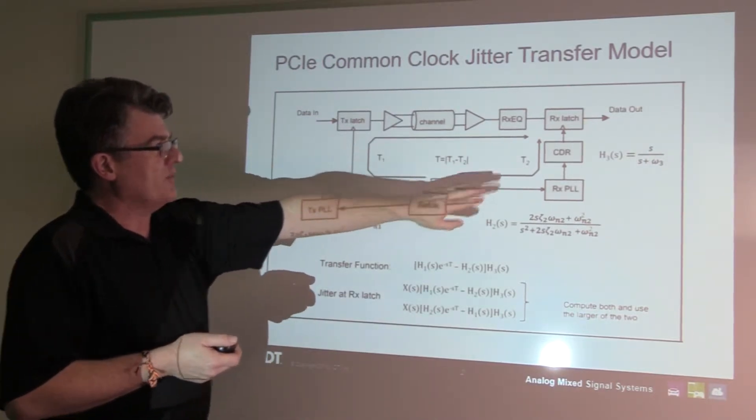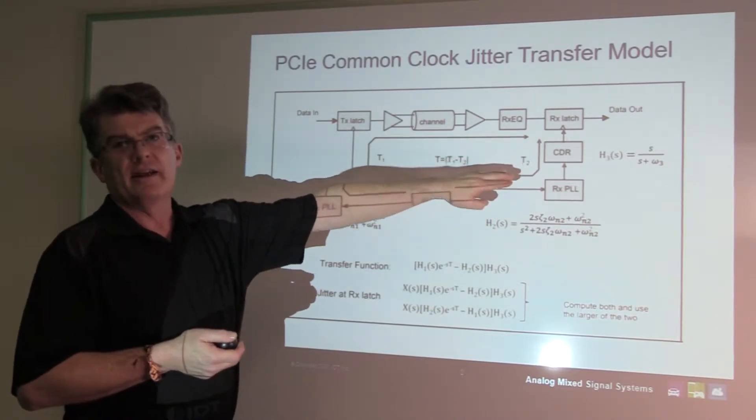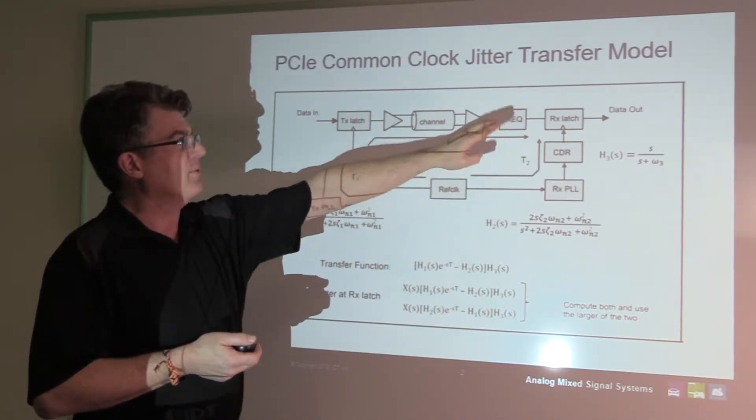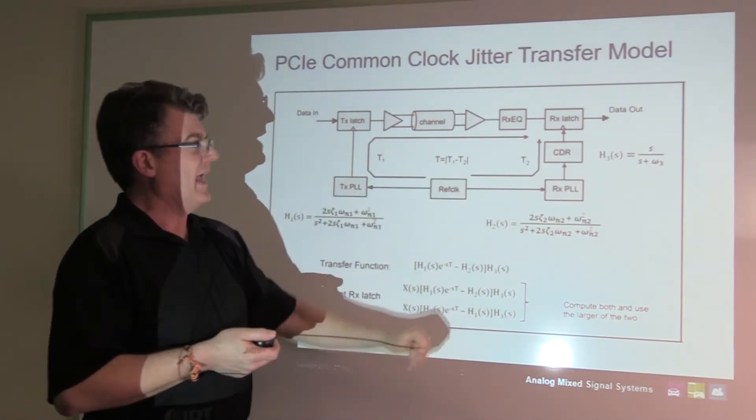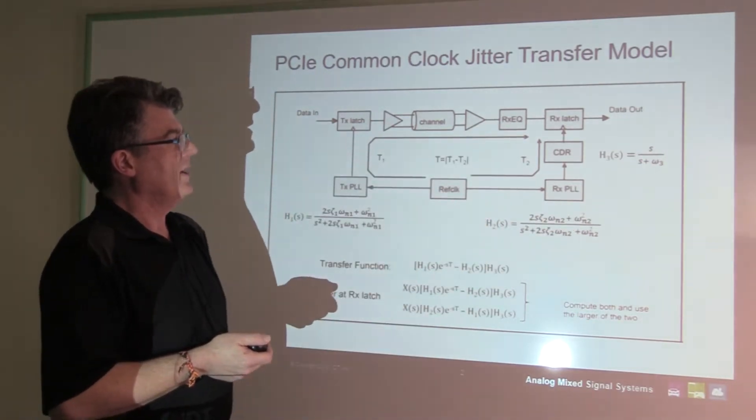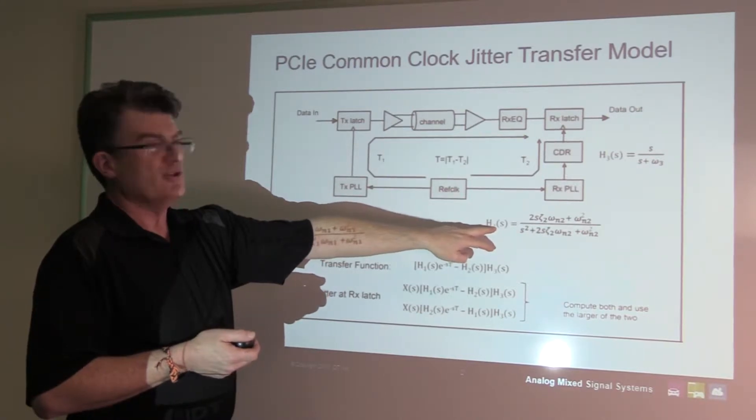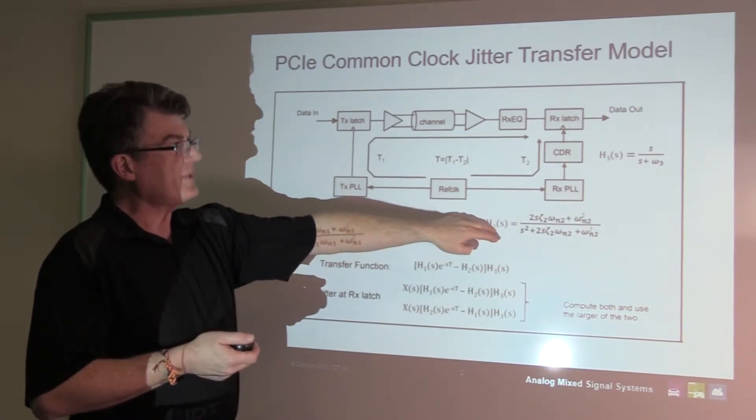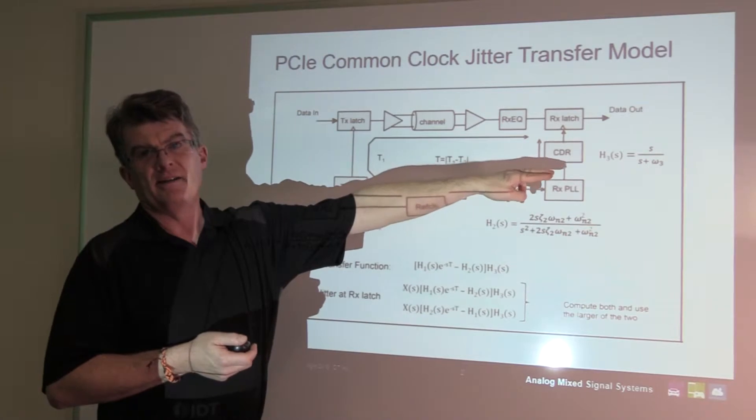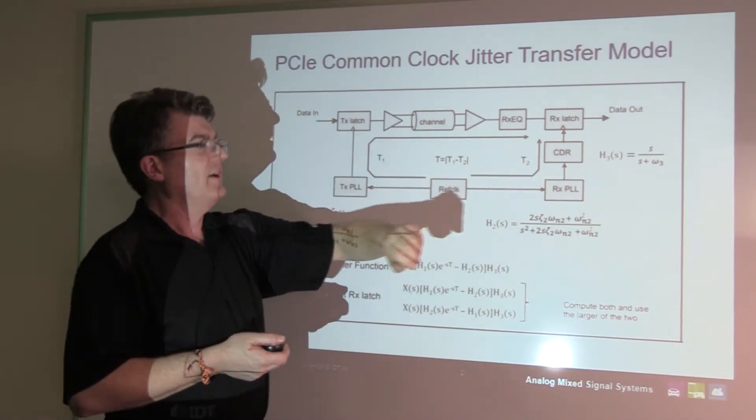And then you've got a receiver PLL, a clock and data recovery unit, and a receiver latch over on the receiver side. The transfer function for that is given by h2, along with an h3 for the clock and data recovery circuit.